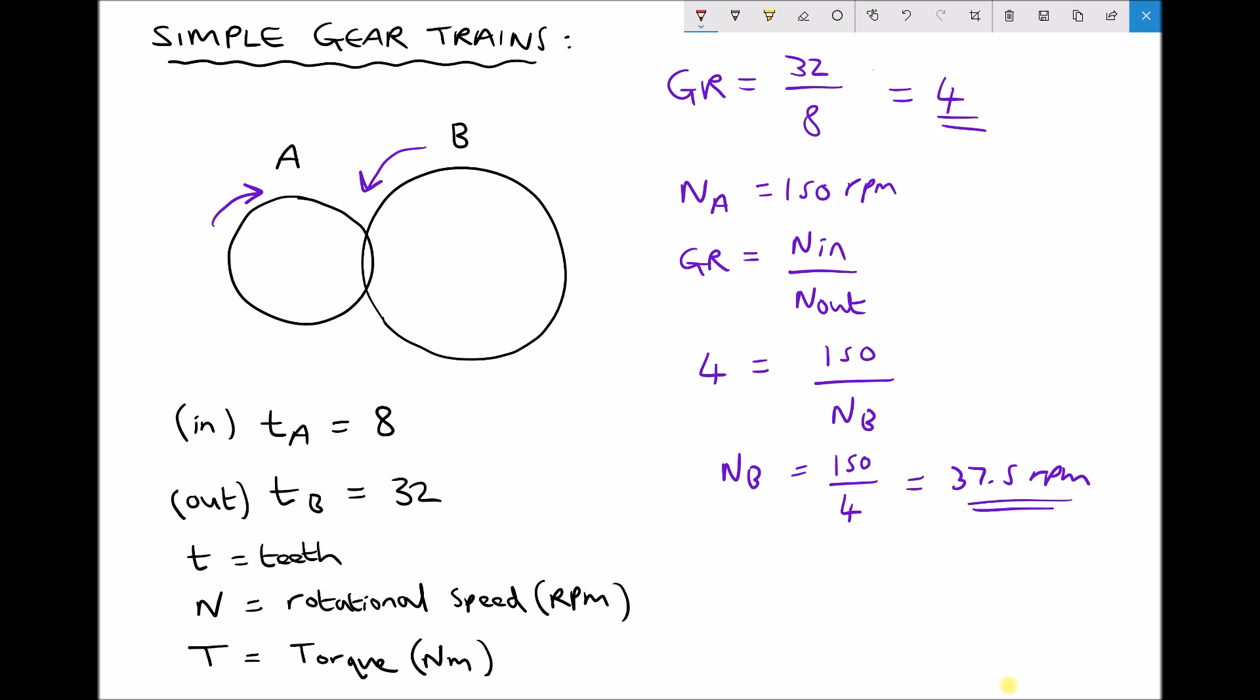So now let's assume that our gearbox is 100% efficient and let's specify that we have an input torque of 15 Nm. Well if we have an input torque of 15 Nm and providing our gearbox is 100% efficient, we know that the gear ratio is the same as T out over T in.